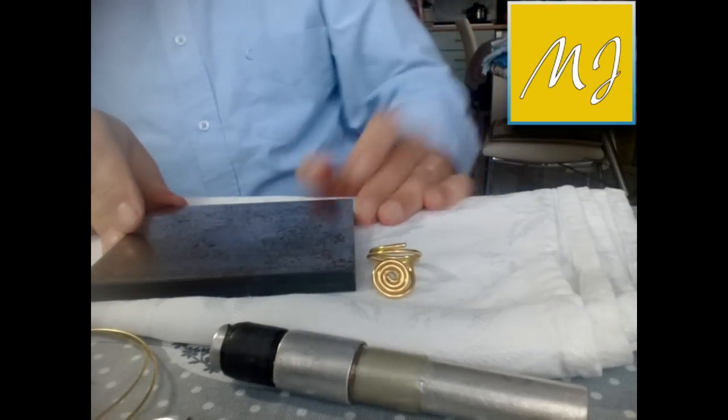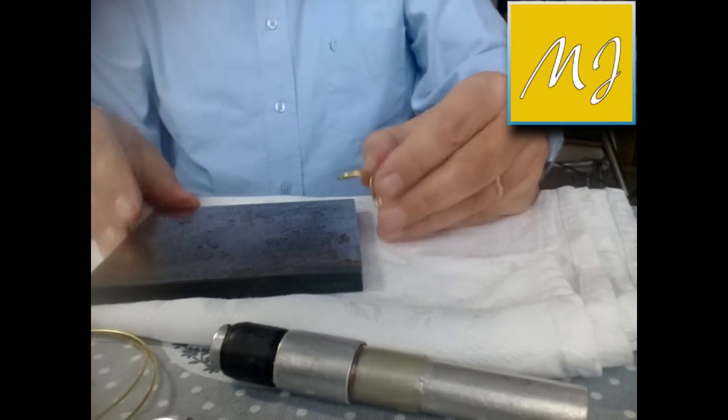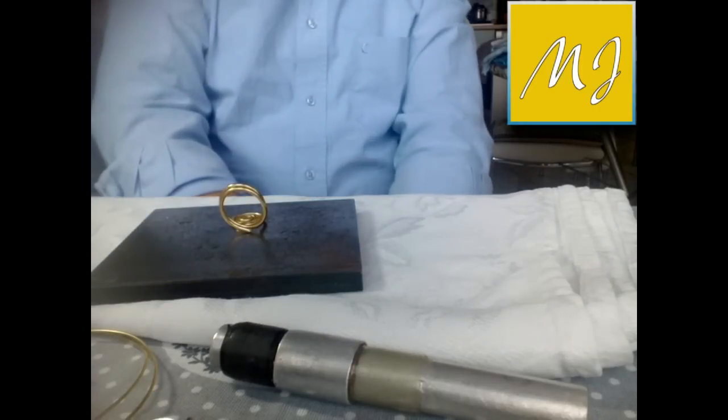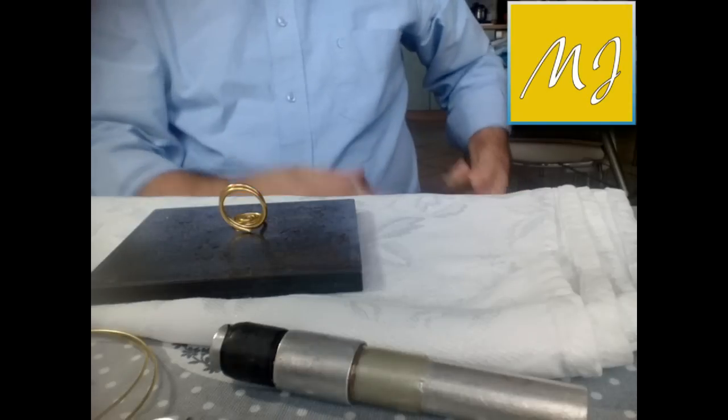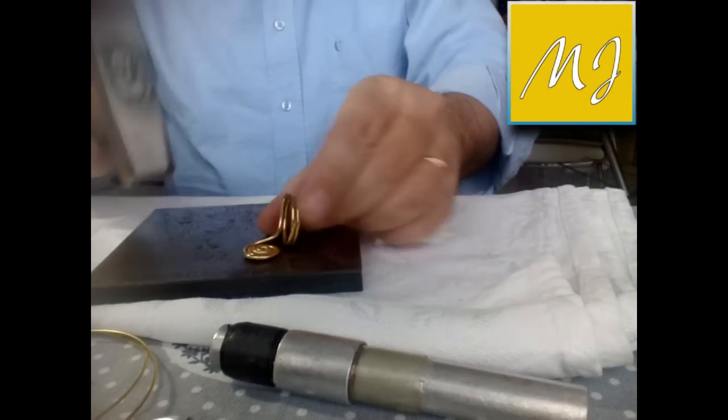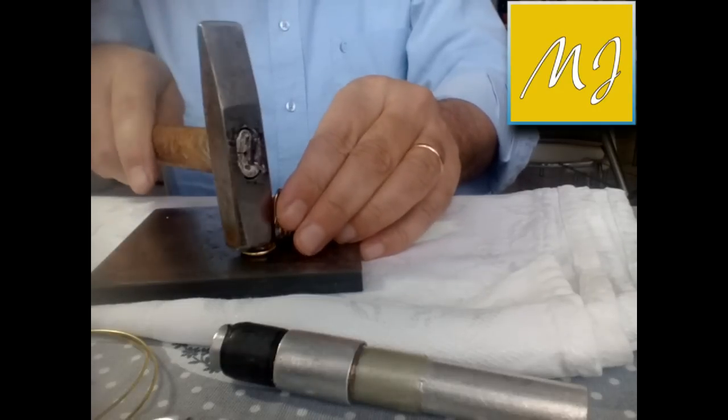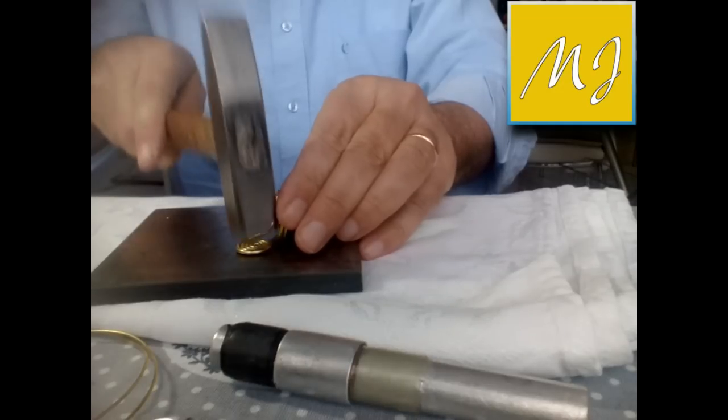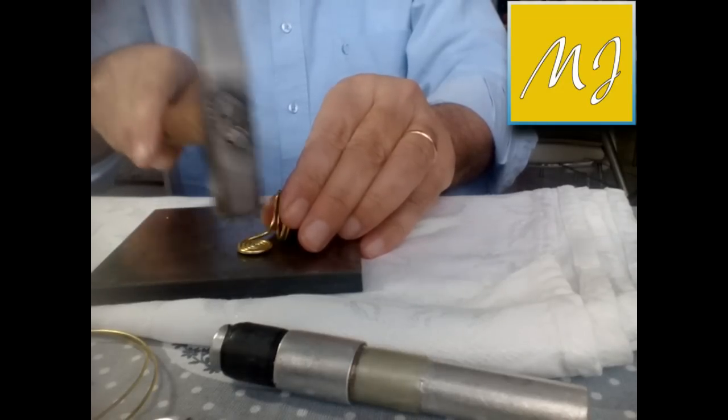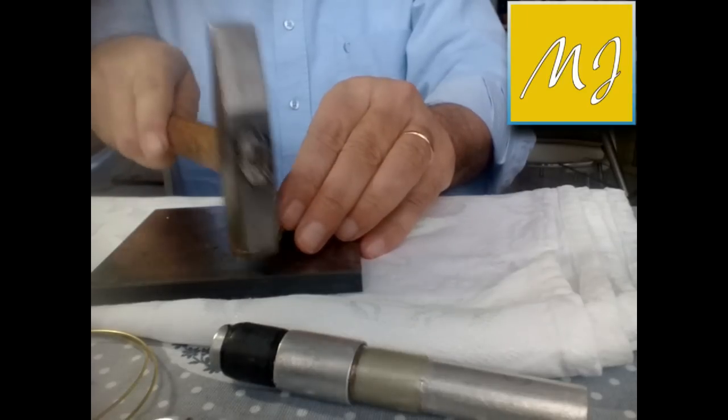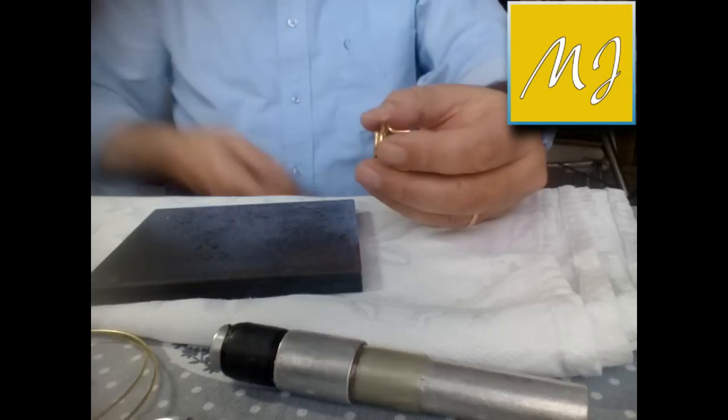Ecco, dopo prendiamo la nostra lastra d'acciaio e tenendo piegata fuori la spirale, possiamo cominciare ad appiattire un pochino la superficie con un martelletto. Io uso un comune martello, non è un martello da orefice, un comune martellino che ho precedentemente lisciato molto accuratamente così da non creare incisioni sul metallo quando si batte.